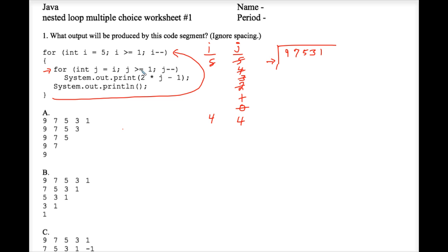Four is greater than or equal to one, so we execute this line of code again. Two times j minus one — that would be eight minus one — seven. Seven prints on a new line.